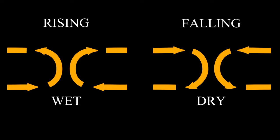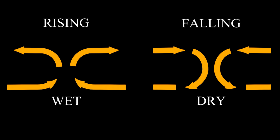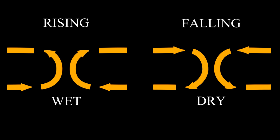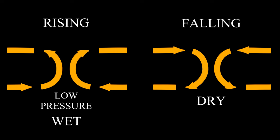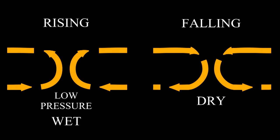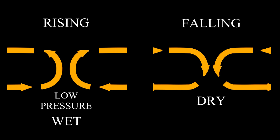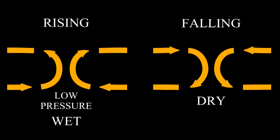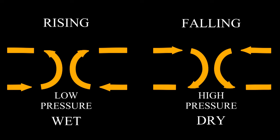When air rises, the air is being pulled away from the surface, so we have a low surface pressure. When air is falling, the air is pressing down onto the surface, so we have high surface pressure. Rising air means rain and low pressure. Falling air means dry air and high pressure.